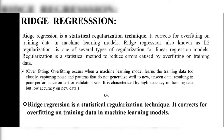Today's topic is ridge regression. Ridge regression is a statistical regularization technique that corrects for overfitting on training data in machine learning models. This regression, also known as L2 regularization, is one of several types of regularization for linear regression models. Regularization is a statistical method to reduce errors caused by overfitting on training data.